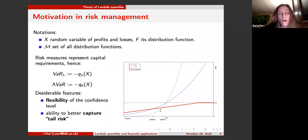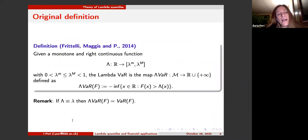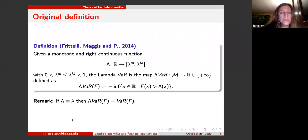This is also one of the reasons why value at risk has been recently replaced by the so-called expected shortfall, which is an average of value at risk on the tails, in order to better capture tail risk. The original definition of lambda quantiles was introduced in the risk management context in a paper with Fritelli, Magis, and myself in 2014, published in Mathematical Finance. Here is the definition of lambda value at risk.